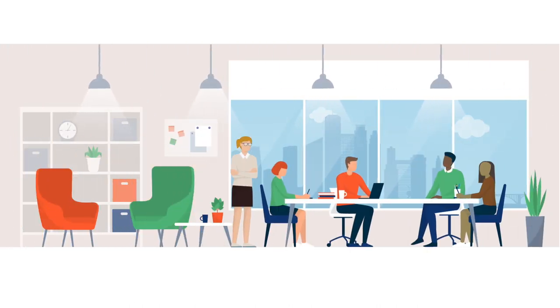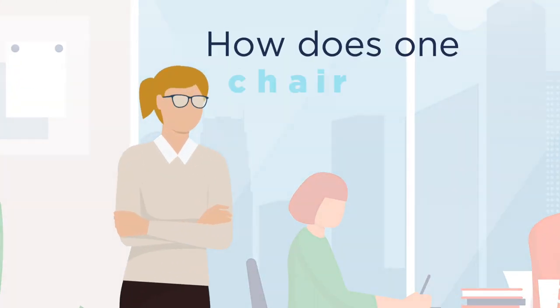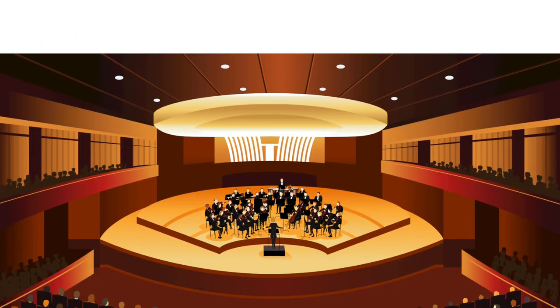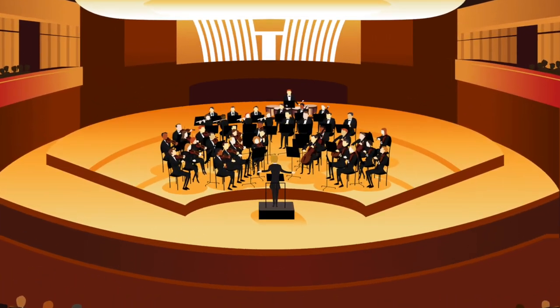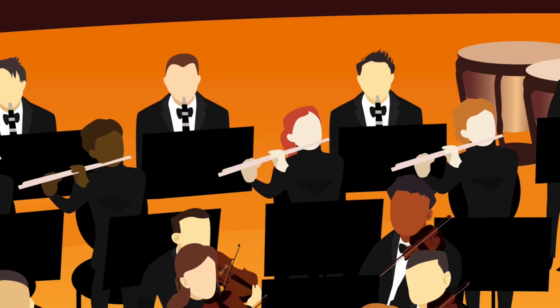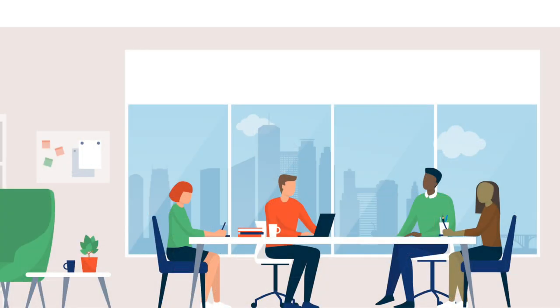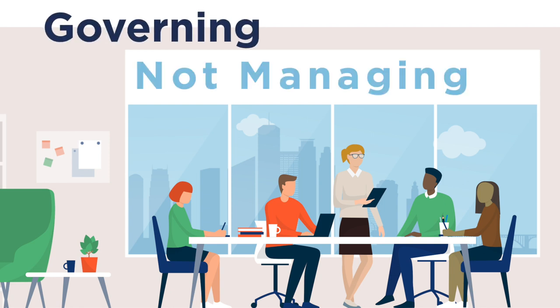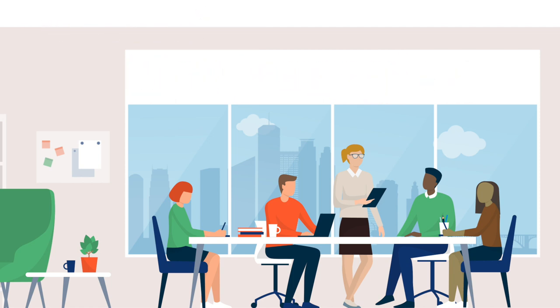So you're chair of your organization's board of directors — how does one chair properly? Like a talented musical conductor, you don't need to be a first-class violinist, but you need to know when to let that violinist solo and how to stop them from breaking their bow on another orchestra member's head. It's all about making sure you and your fellow board members are focused on moving your nonprofit's mission forward. As the board chair, you are governing, not managing — keep your eye on the big picture and let the staff do their jobs.